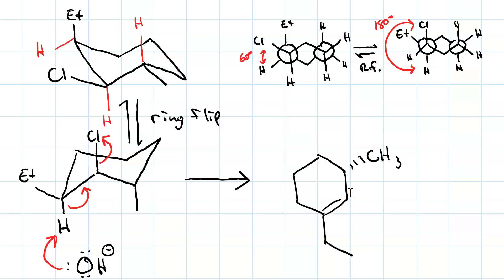We couldn't form the pi bond between the alpha carbon and the methyl carbon. It has to be between the alpha carbon and the beta carbon that's bonded to the ethyl group. Also, when you have a double bond, it's not correct to draw a chair anymore.